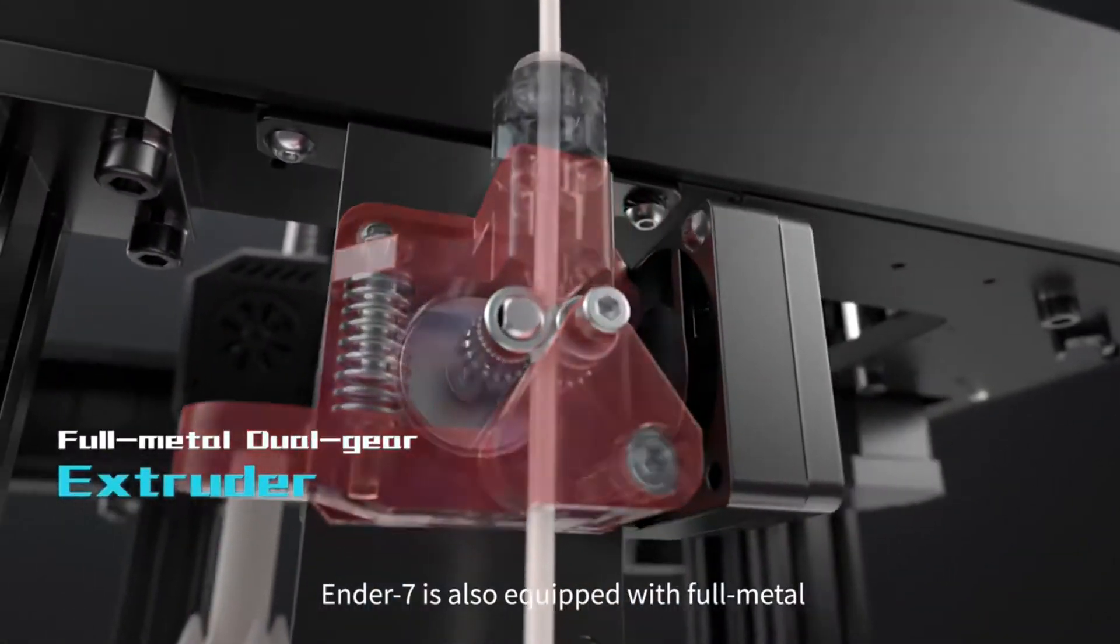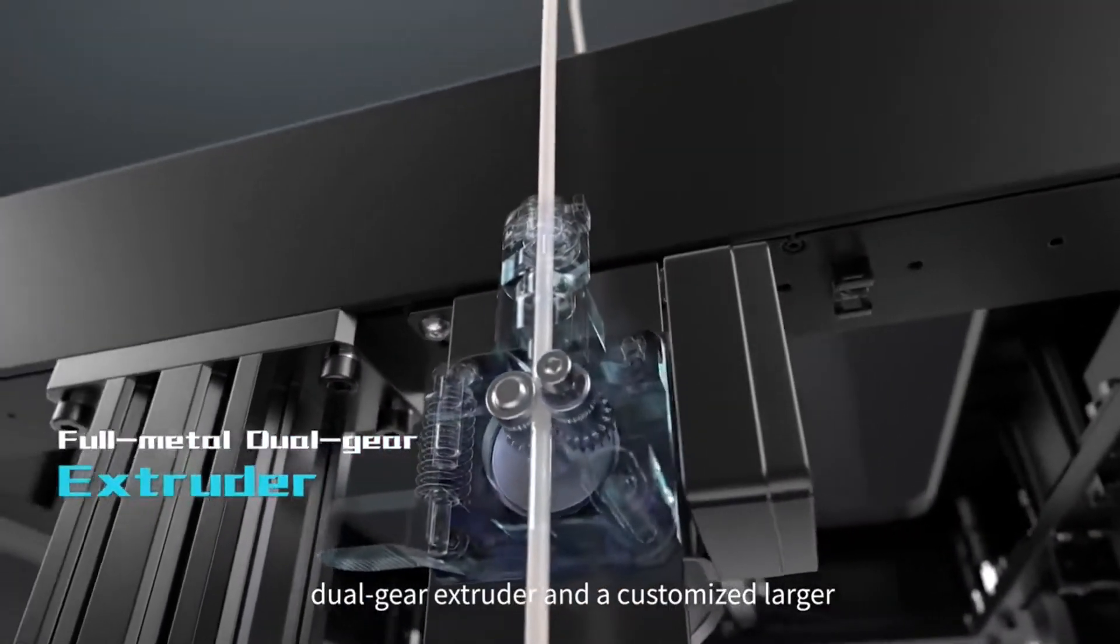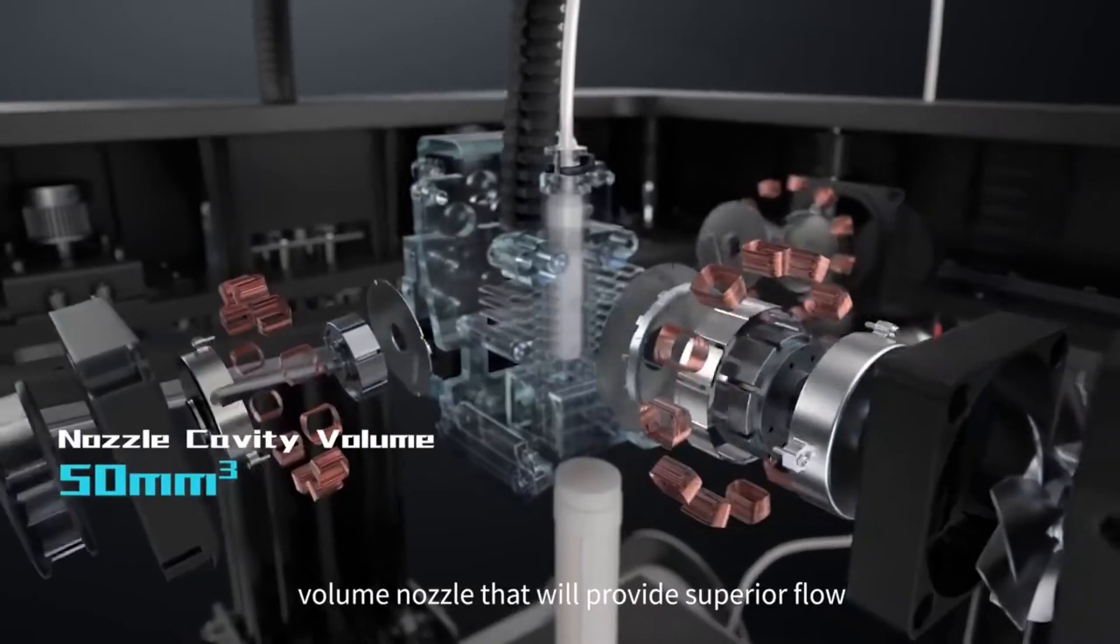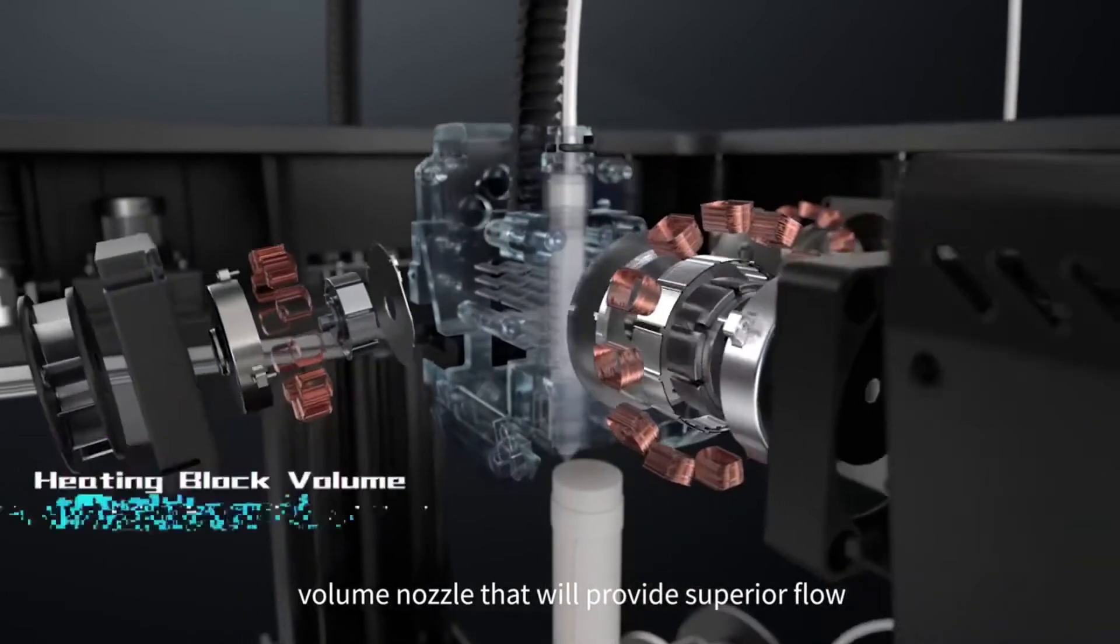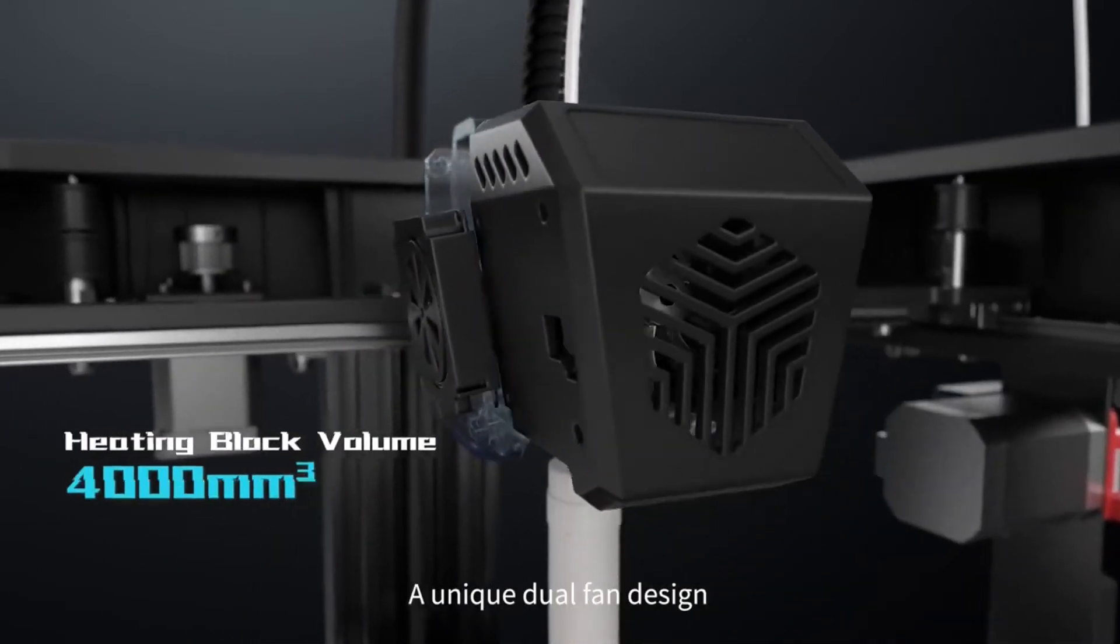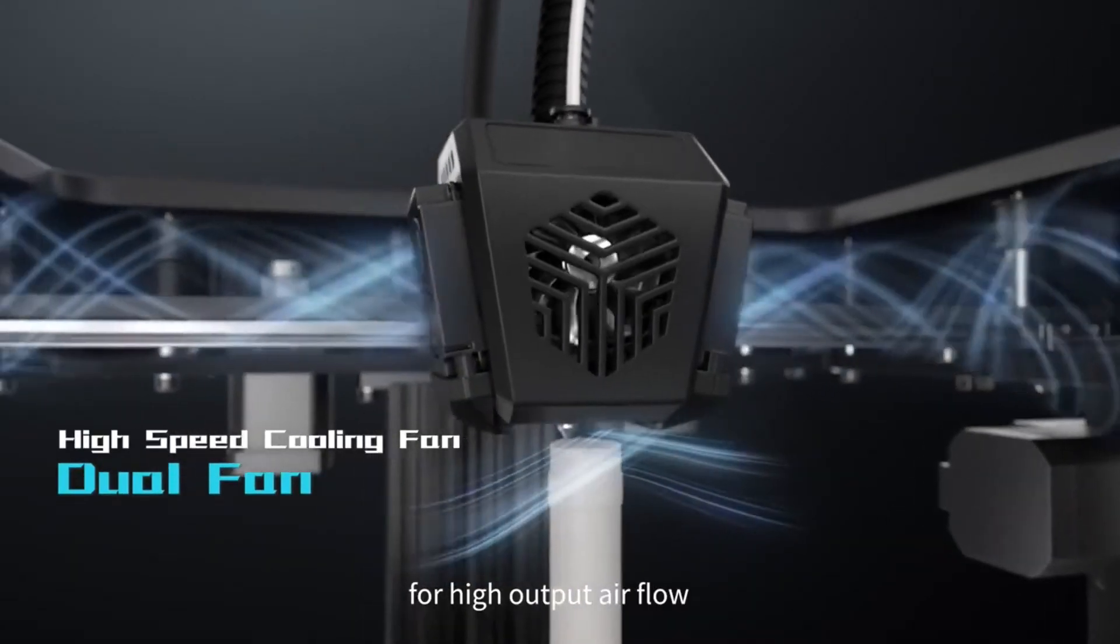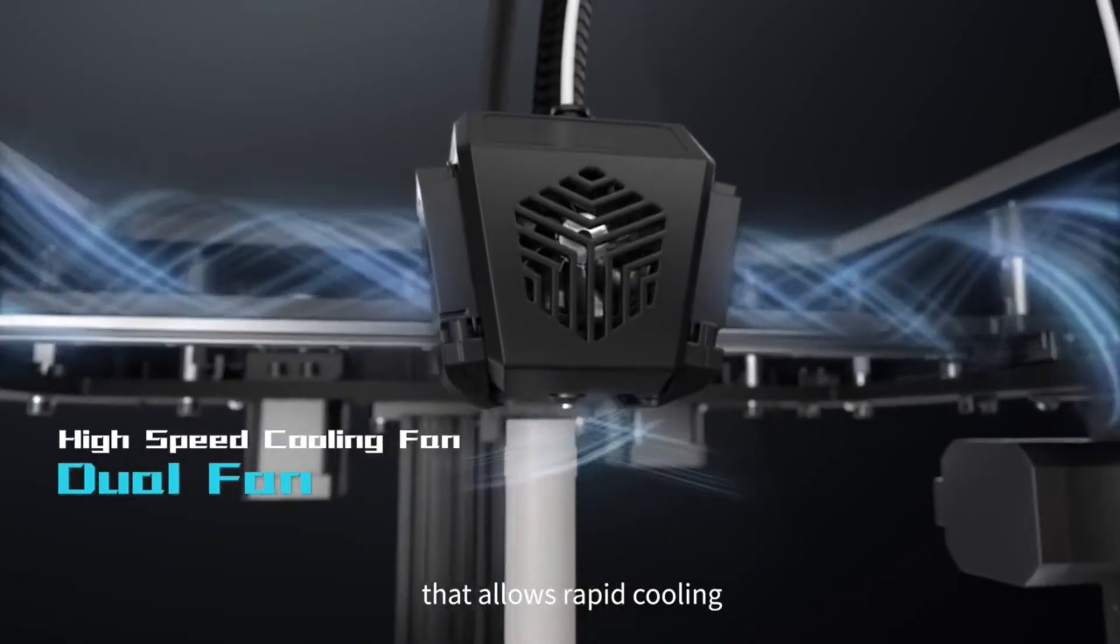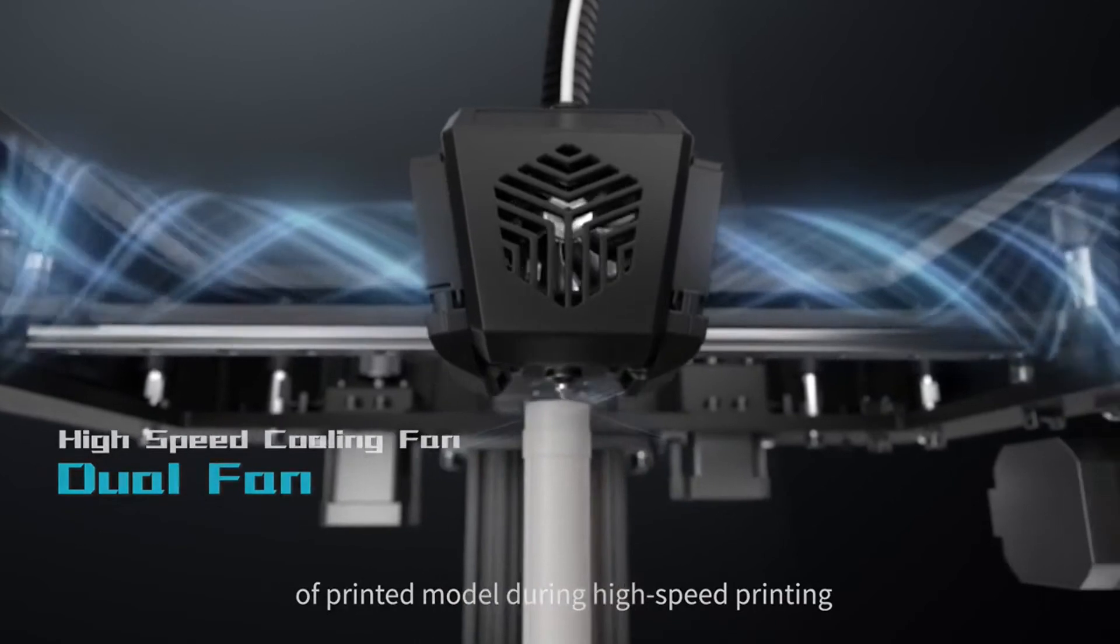Perfect. Ender 7 is also equipped with full metal dual gear extruder and a customized high volume nozzle that will provide superior flow in printing experience. A unique dual fan design for high output airflow allows rapid cooling of printed models during high-speed printing.